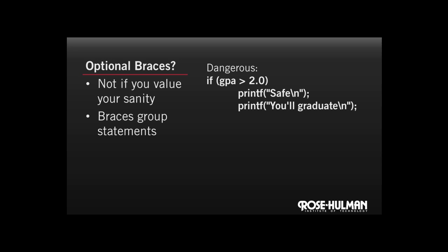What happens when we run this code for a member of the square root club? Well, if your GPA is, say, 0.5, we hit that if statement. That's 0.5 is less than 2, so we don't do the if. And so we skip over the body of the if. But the body of the if, in this case, because we omitted the braces, would just be the printf safe. And so we run that code, and it's going to print out you'll graduate even though your GPA is only 0.5. So that's dangerous code.